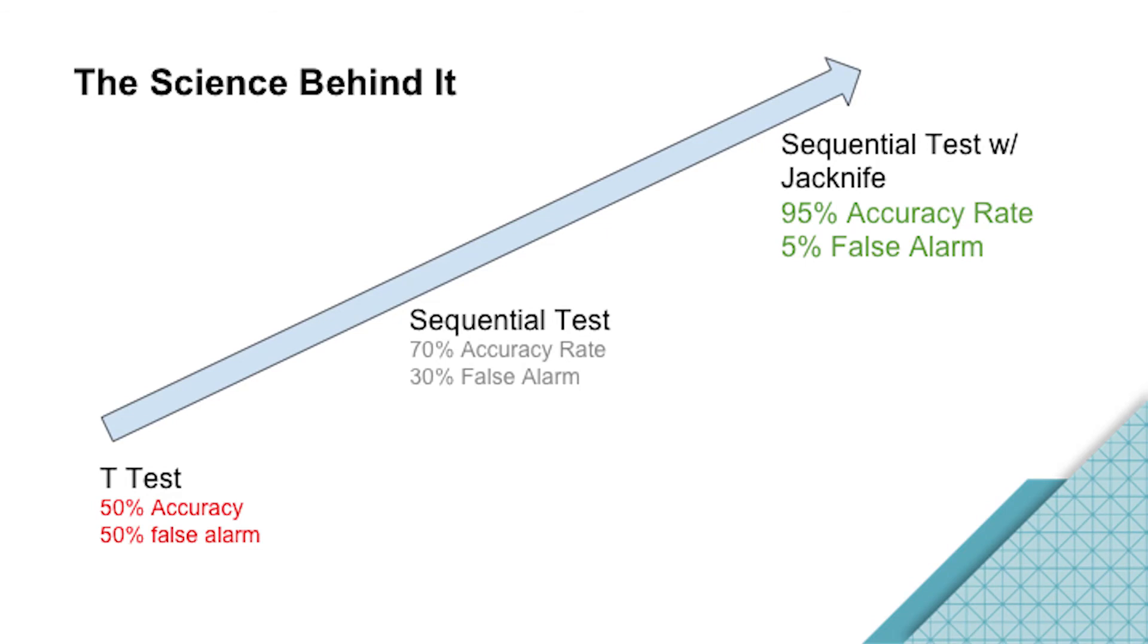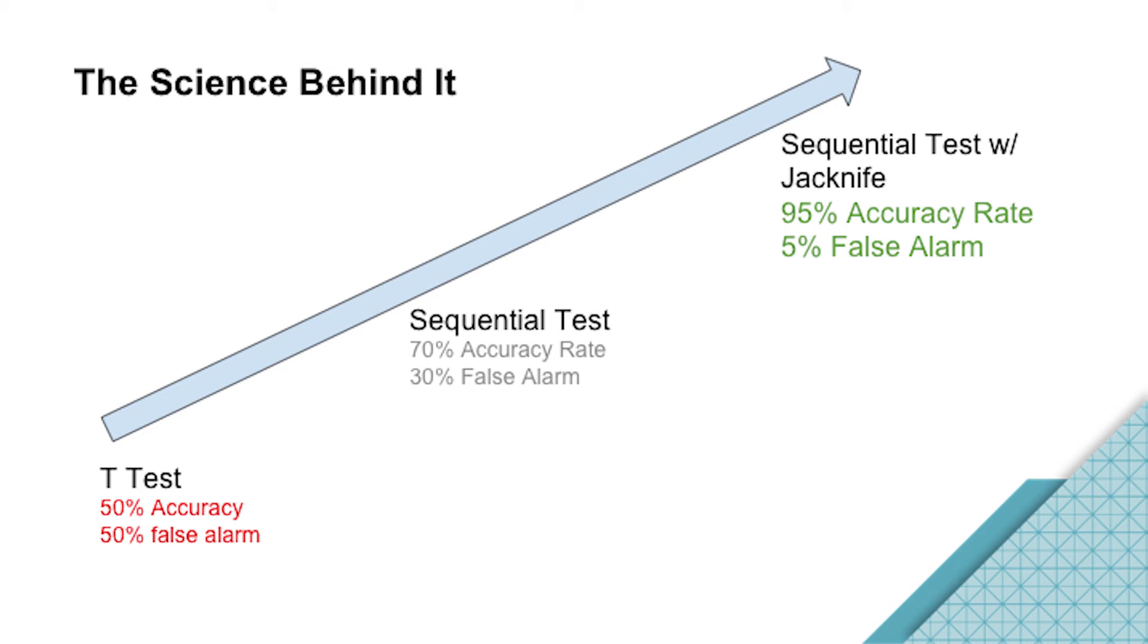First, we explore different algorithms. We use T-Test first, but that's not very accurate. We only achieve 50 percent accuracy. Then we use the sequential test, but it's still not good enough. At the end, with thousands of simulations, we found out that the sequential test with jackknife can help us achieve 95 percent accuracy rate in predicting the outage.